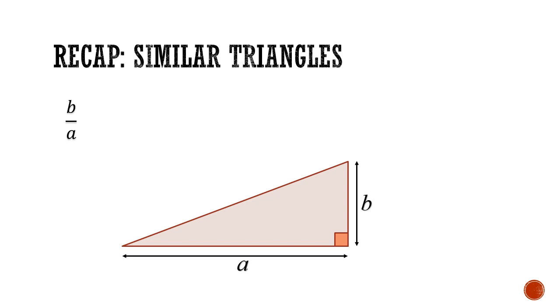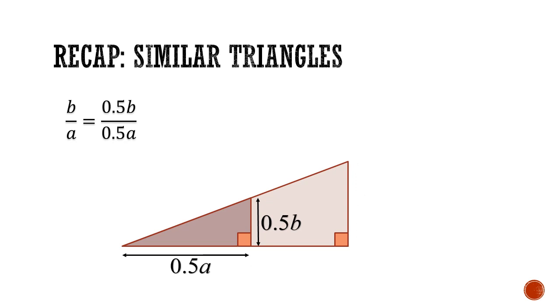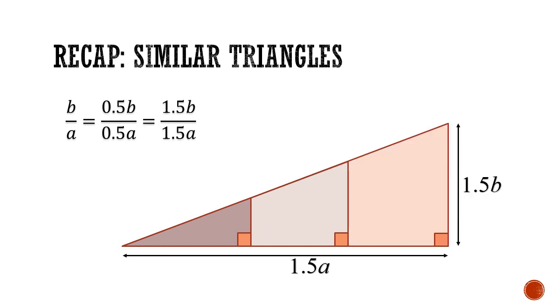But before we begin, let's go back to similar triangles. Let's say we have a right-angled triangle with a height of b and a base of a. The ratio of the height to the base is b over a. Notice that if we half the base and half the height, we still get the same ratio for the height to base. And if we increase the original triangle by 50%, the ratio of the base to the height remains unchanged. We can say that this ratio is invariant. This invariant ratio is the basic premise behind the trigonometric ratios.